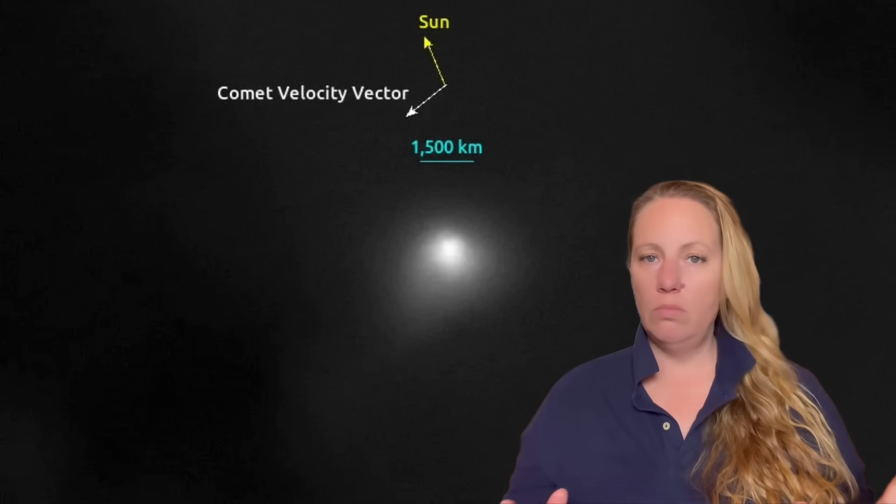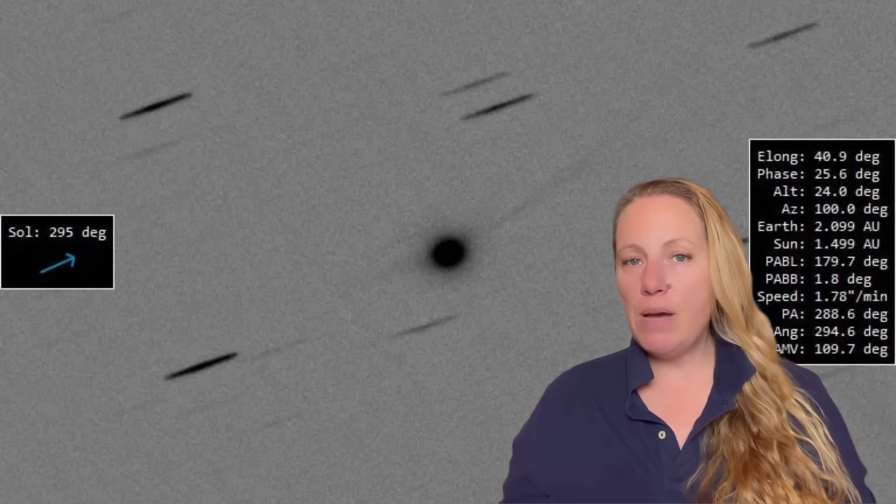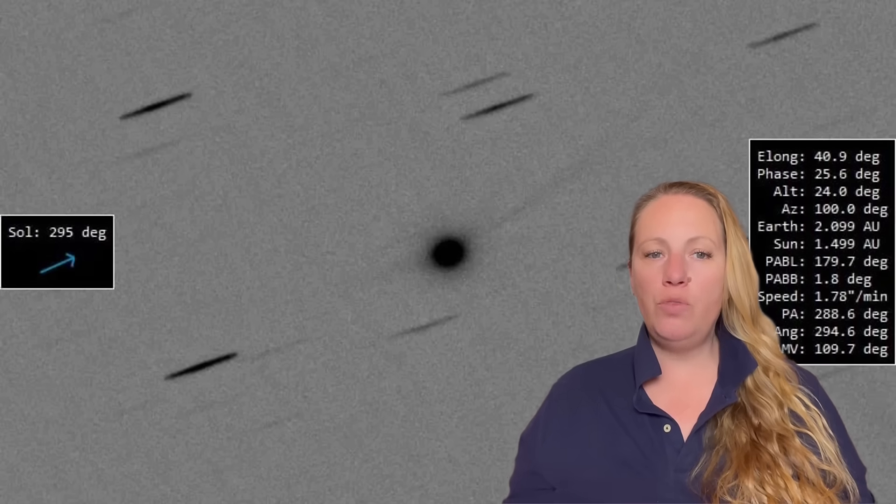That's what comets would do. But it's much more difficult to account for a plume that is extended perpendicular to the direction of the sun and ahead of the object, not behind the object.